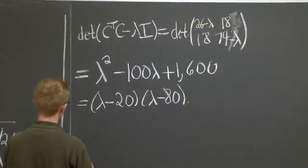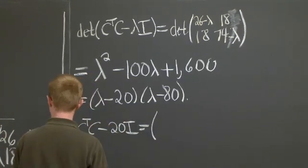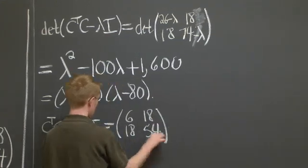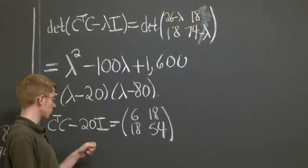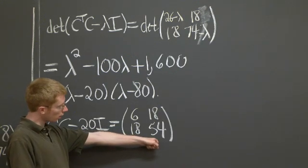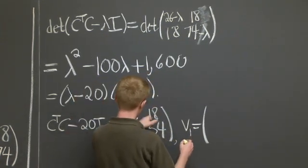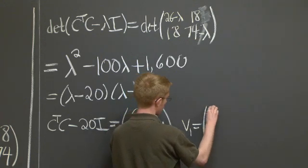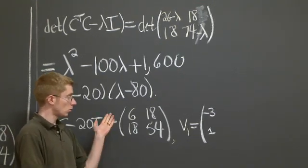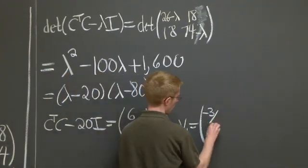Now what are the eigenvectors? You take C transpose C minus 20 times the identity, and you get 6, 18, 18, and 54. So to find the eigenvector with eigenvalue 20, we need to find a vector in the null space of this matrix. Note that the second column is 3 times the first column, so our first vector V1, we could take it to be negative 3, 1, but we'd like it to be a unit vector because the columns of V should be unit vectors because they're orthonormal. So 3 squared plus 1 squared is 10, we have to divide by the square root of 10.